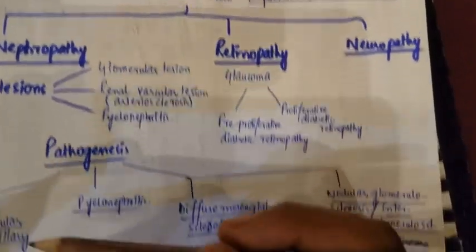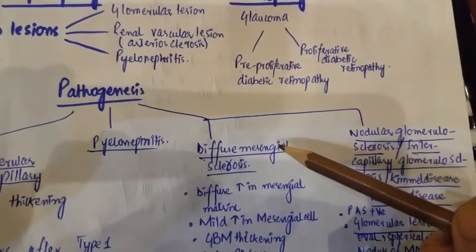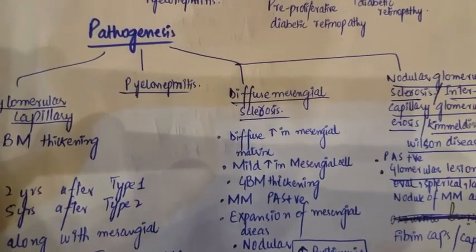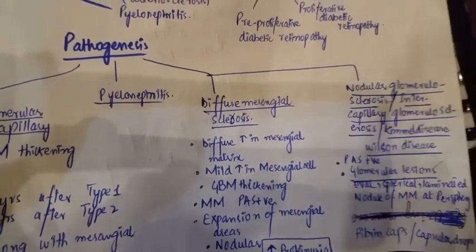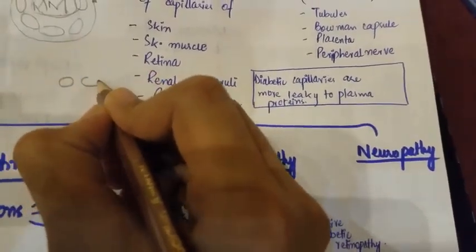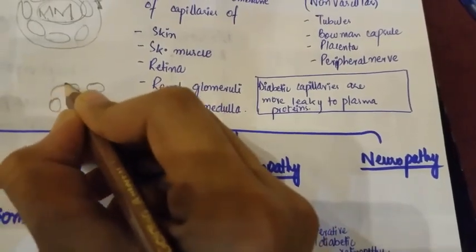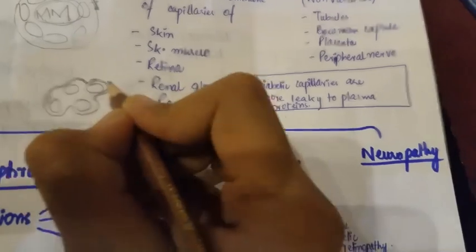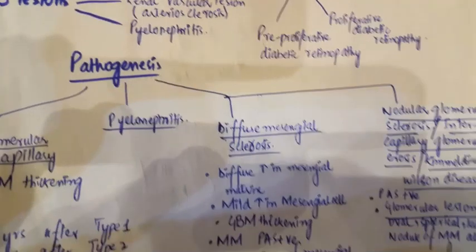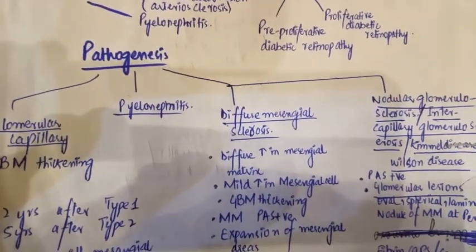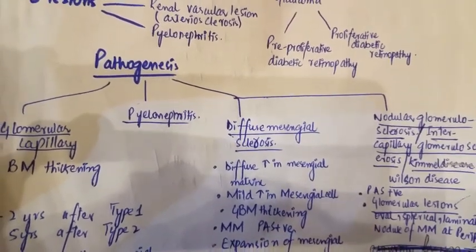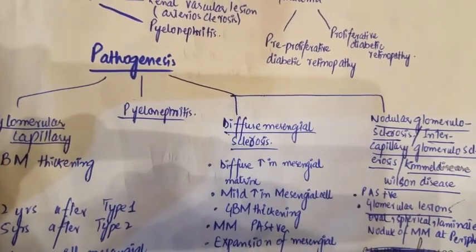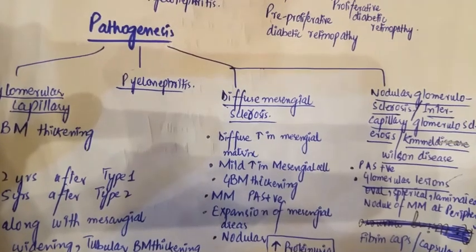The pathogenesis of nephropathy includes glomerular capillary basement membrane thickening, diffuse mesangial sclerosis, and nodular glomerulosclerosis. Glomerular capillary basement membrane thickening is simply the thickening of the basement membrane of the glomerulus. It starts occurring after two years of development of type 1 diabetes and five years after type 2 diabetes. It occurs along with mesangial widening and tubular basement membrane thickening.